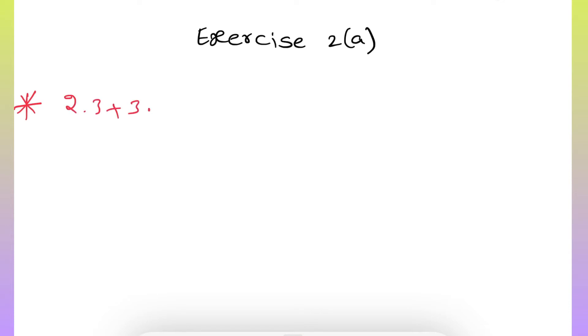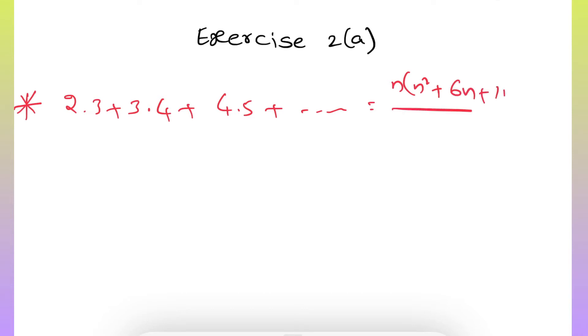Hello everyone. In this video we are going to discuss Exercise 2 of mathematical induction. If you didn't watch the previous videos, the link is in the description. In this exercise, we already discussed the first question in the previous video. In this video, I'm going to discuss from the second question onward. The question is: show that 2·3 + 3·4 + 4·5 + ... = n(n² + 6n + 11)/3, by using mathematical induction.